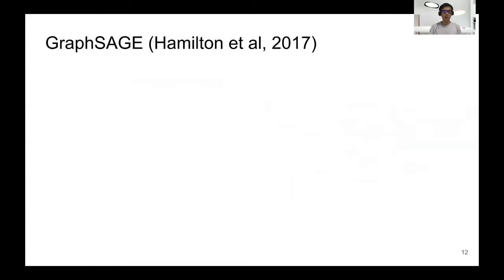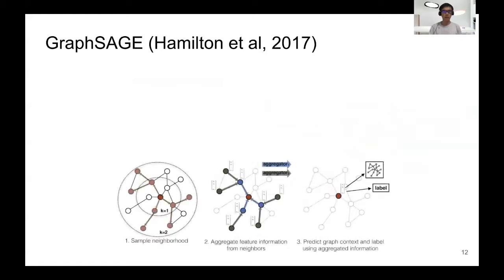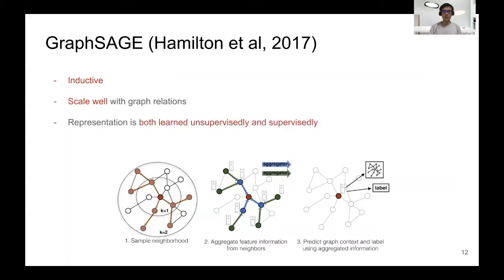Our model is inspired by GraphSage, in which for each node we first sample the neighbors, then we aggregate the feature information from the neighbors. The news representations can be optimized with unsupervised context predictions or supervised node-label predictions. GraphSage has the advantage of being inductive, as well as it scales well with graph relations. Since the representation is both learned supervised and unsupervised, it's shown to obtain good quality. We can also replace the vanilla aggregation with the temporal aggregation that is time-sensitive.